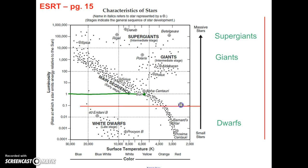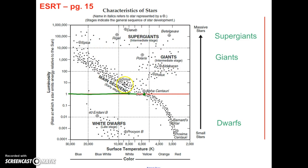I'm going to put a red line where the sun is on the graph. Any star above that red line is larger than the sun and therefore brighter. Any star below the red line is smaller than the sun and dimmer.